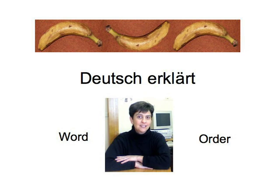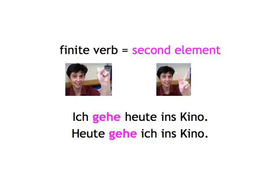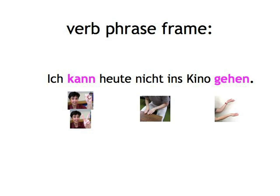Before we learn how to answer the question why is the banana bent, we have to get the building blocks of sentences right and into the correct sequence. We know about the finite verb as second element rule: Ich gehe heute ins Kino. Heute gehe ich ins Kino. And we know about the frame formed by the verb phrase: Ich kann heute nicht ins Kino gehen. But are there any rules for the way we German speakers, according to Mark Twain, shovel in the rest of the sentence? You bet there are. You know enough of German grammar by now to guess that there's always a method in the madness. However strange things may seem at times, they always make sense in the end.